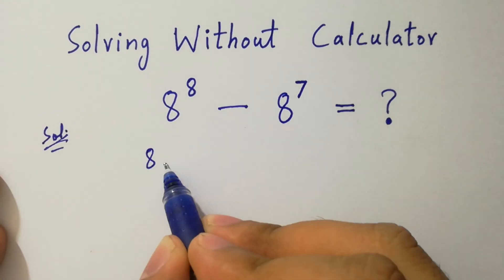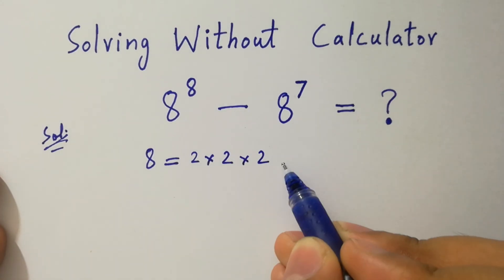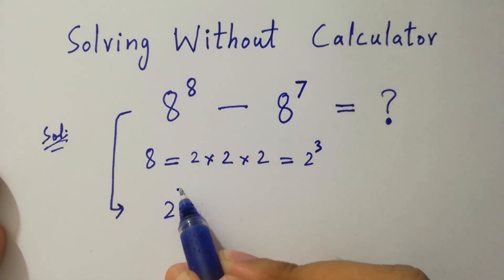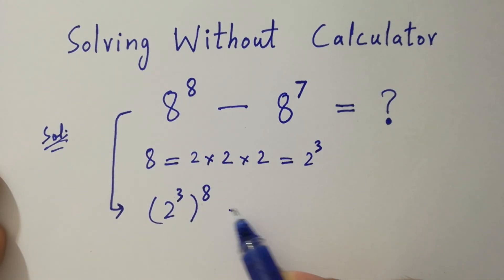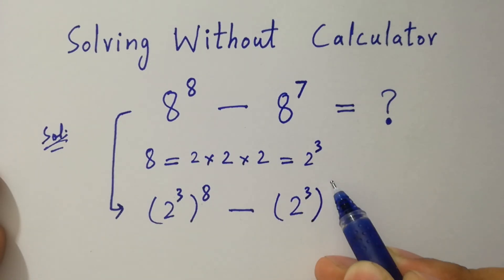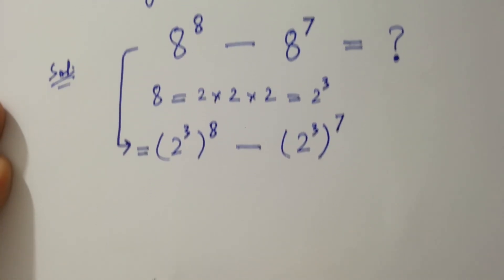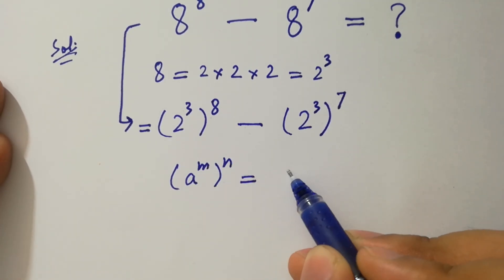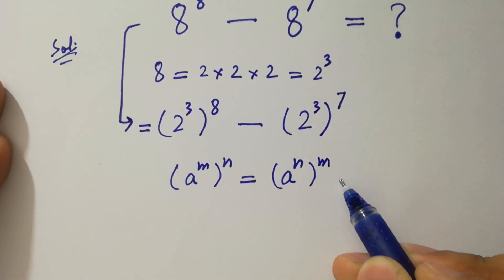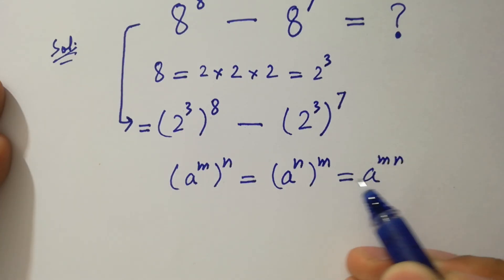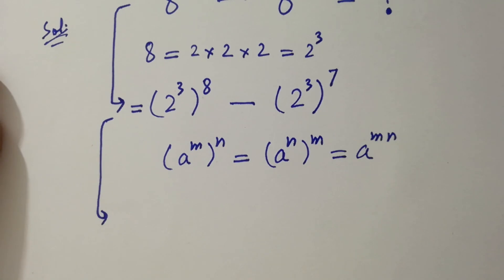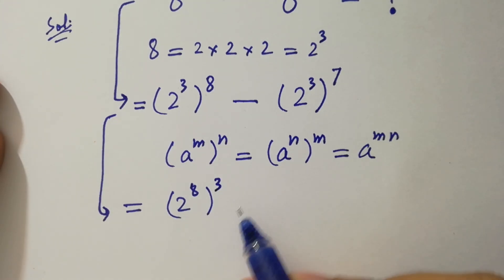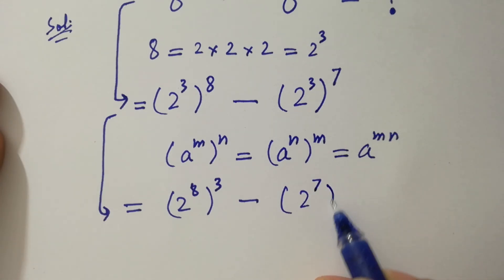Since 8 equals 2 times 2 is 4, 4 times 2 is 8, equal to 2 cubed. Then it will be 2 cubed to the power 8 minus 2 cubed to the power 7. As a to the power m, to the whole power n, equals a to the power m times n. Then we can write it as 2 to the power 24 minus 2 to the power 21.